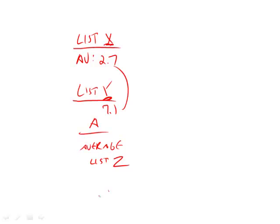So you can add these two numbers together right here, and that will give you 9.8. Again, average, you also have to divide by 2. So now we have 4.9 as our average of list Z.